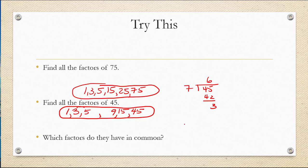Sometimes you're going to be asked which factors two numbers have in common. In this case they have the factors 1, 3, 5, and 15 in common. So these are known as common factors.